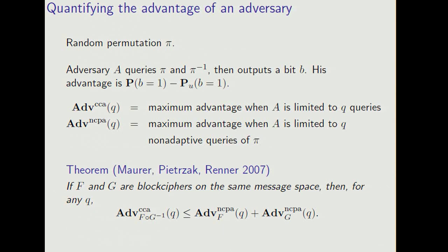Now some theoretical setup. Suppose you have a random permutation, pi. And an adversary queries pi and pi inverse, then outputs a bit b, which is his guess as to whether the permutation is pi or a uniform permutation. His advantage is defined as the probability that b is 1 if it's pi, minus the probability if it's a uniform permutation.